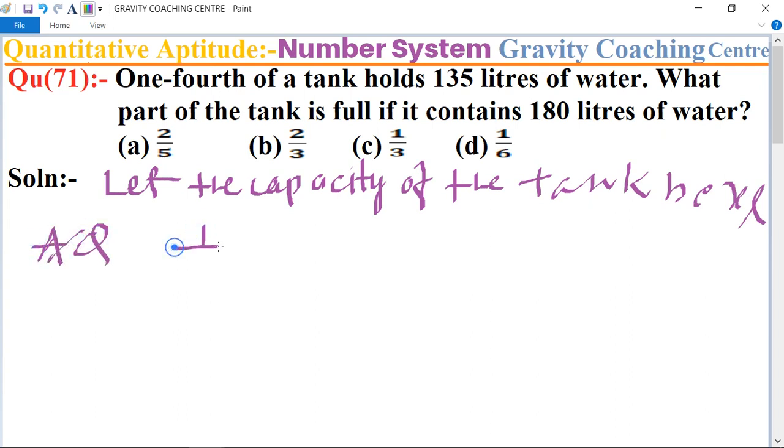One-fourth of the tank of water means one upon four x is equal to 135 liters. So therefore x equals 135 into 4, equals 540.